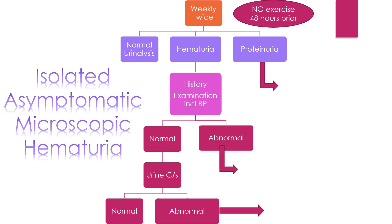If urine analysis is normal, reassure and follow up only as required. If you find hematuria with proteinuria, follow the proteinuria flowchart. If microscopic hematuria persists, do a complete history and examination including blood pressure, looking for all possible causes. If everything is normal and history and examination give no clues and blood pressure is normal, do a urine culture and sensitivity.